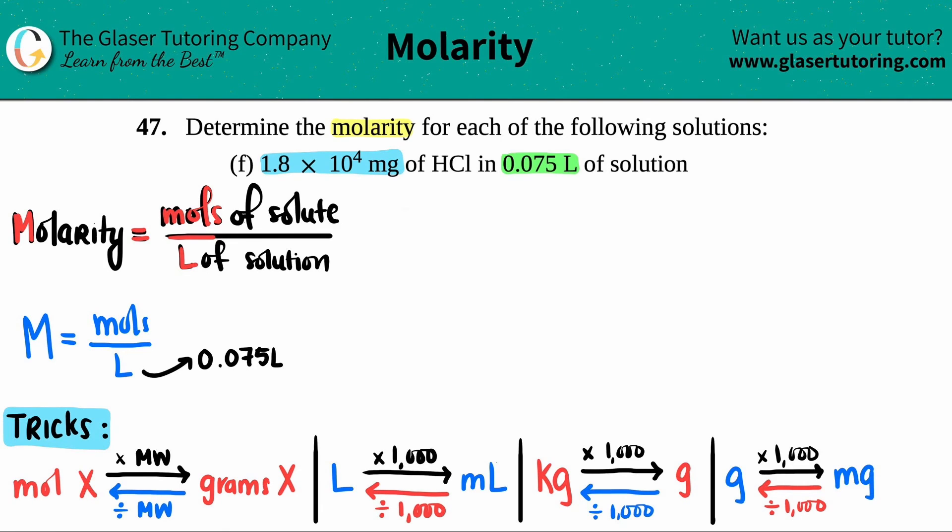Did they give us the liter? Yeah, they did—0.075. So I know this value. Now I just have to somehow convert 1.8 times 10 to the fourth milligram into mole. We have to take the 1.8 times 10 to the fourth milligram and somehow convert it into moles.